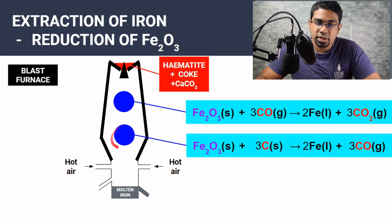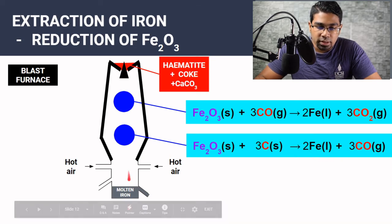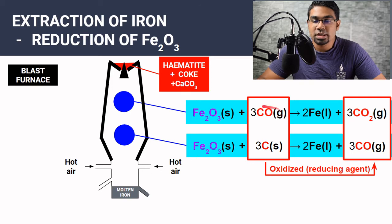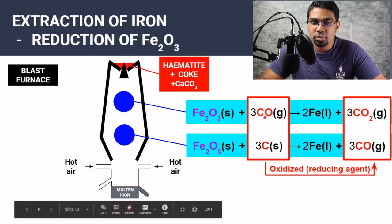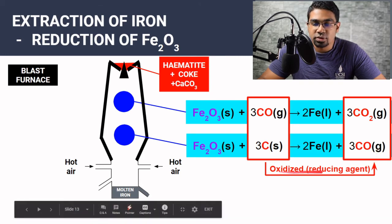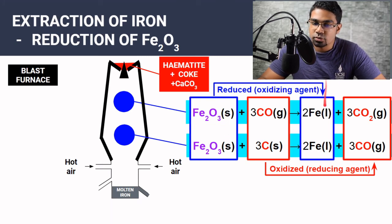At the hotter bottom region, iron(III) oxide also reacts directly with carbon from the coke to form iron in liquid form and carbon monoxide. In both reactions, carbon monoxide and carbon are both oxidized — carbon monoxide is oxidized to carbon dioxide, and carbon is oxidized to carbon monoxide. Since they are oxidized, they act as the reducing agents to reduce the iron(III) oxide. Iron(III) oxide is reduced to iron, so it acts as the oxidizing agent.